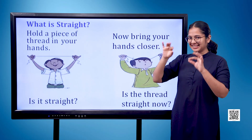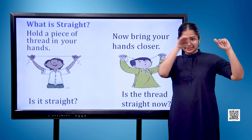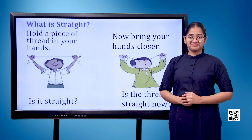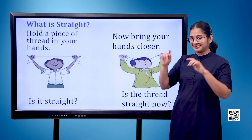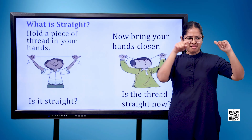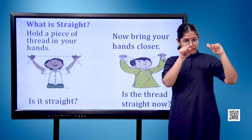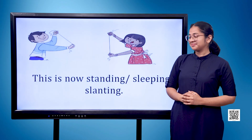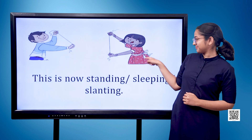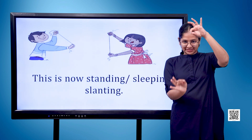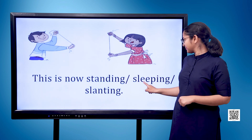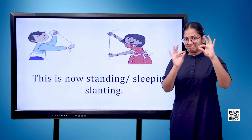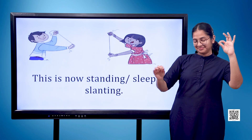Here we can see the image of a boy holding two ends of a thread in his hands. Now bring your hands closer — is the thread straight now? Here we see the image of a boy who has loosened the ends of a thread and it has turned into a curve. This is now a curved line, as opposed to standing, sleeping, or slanting.